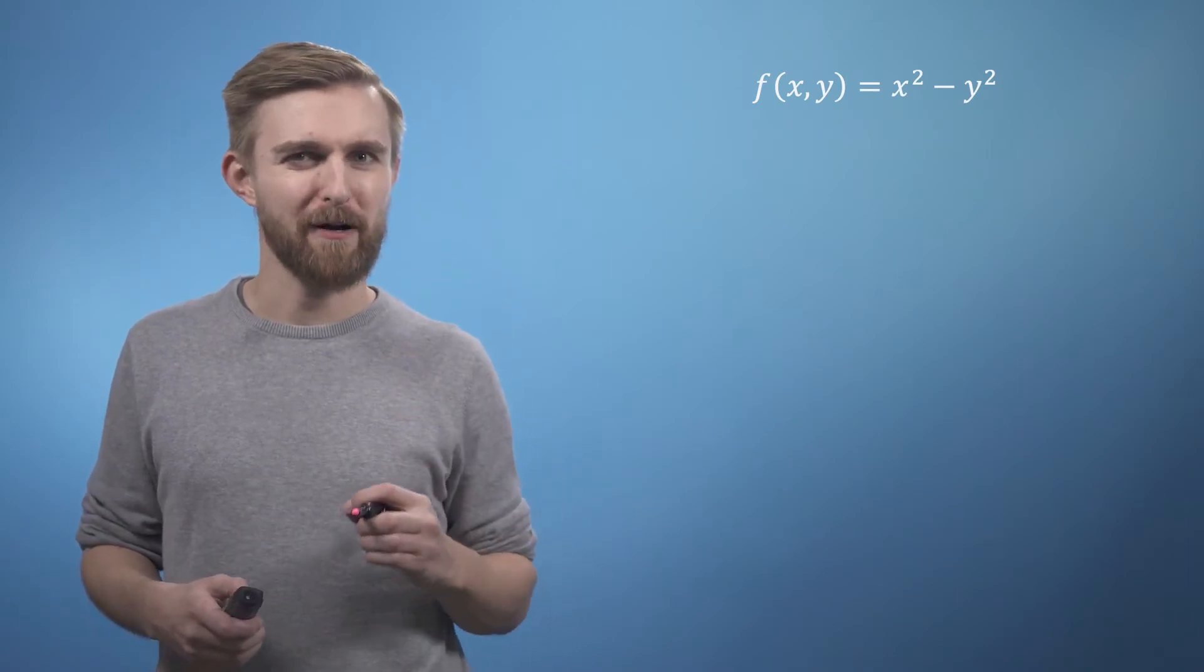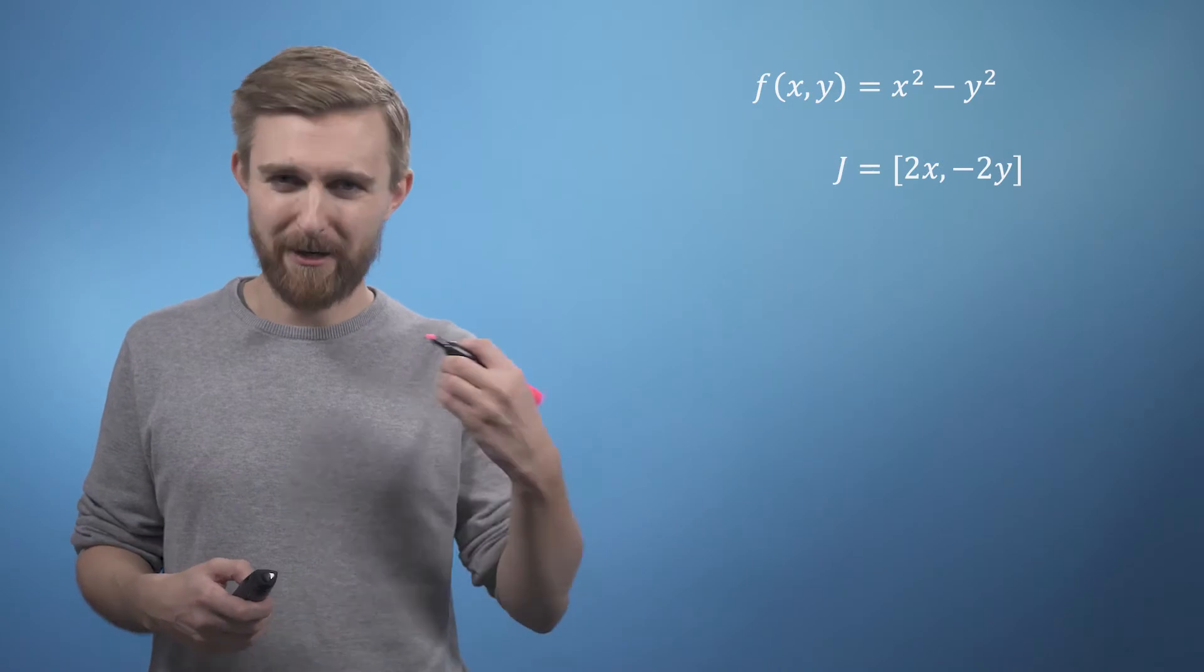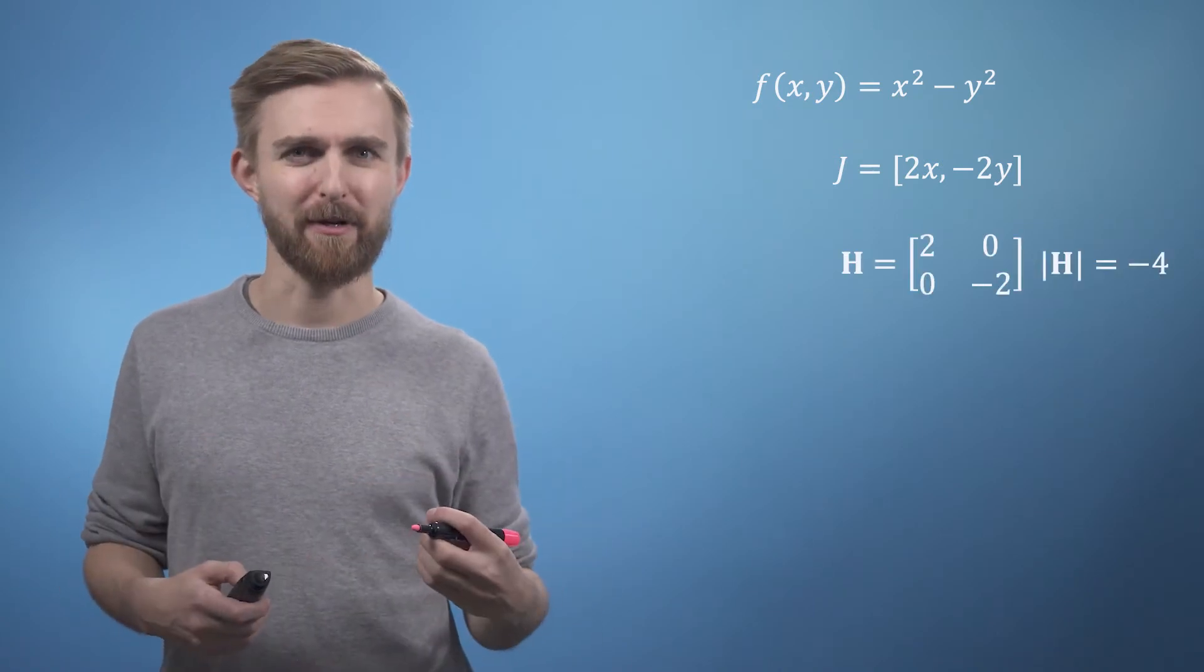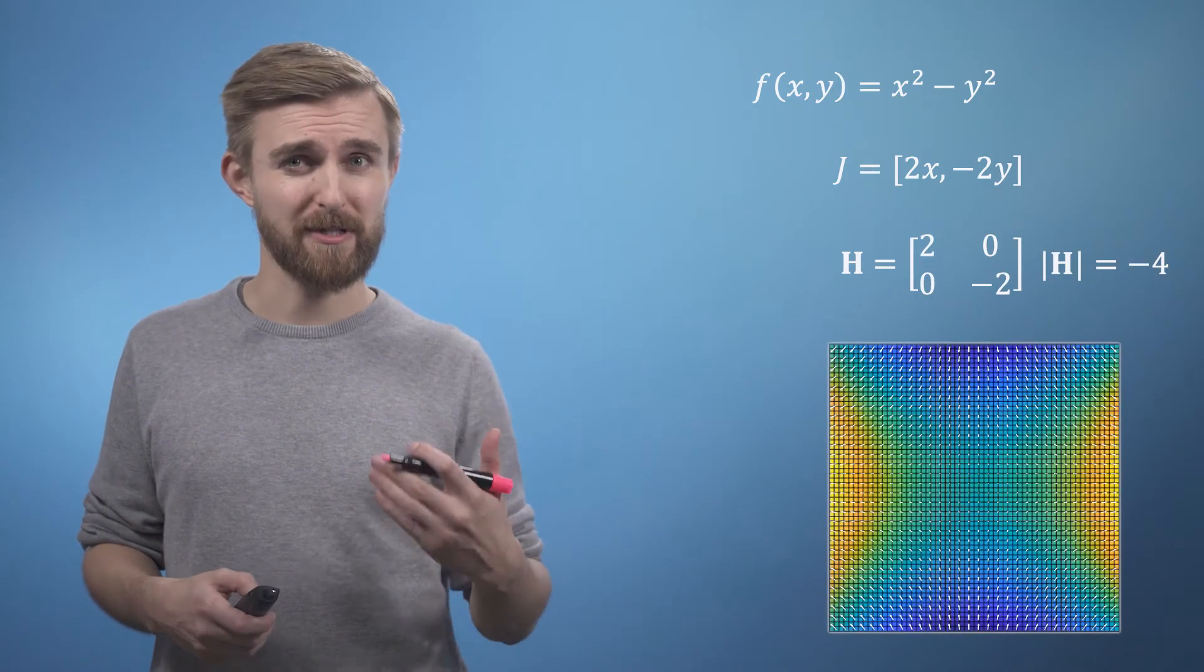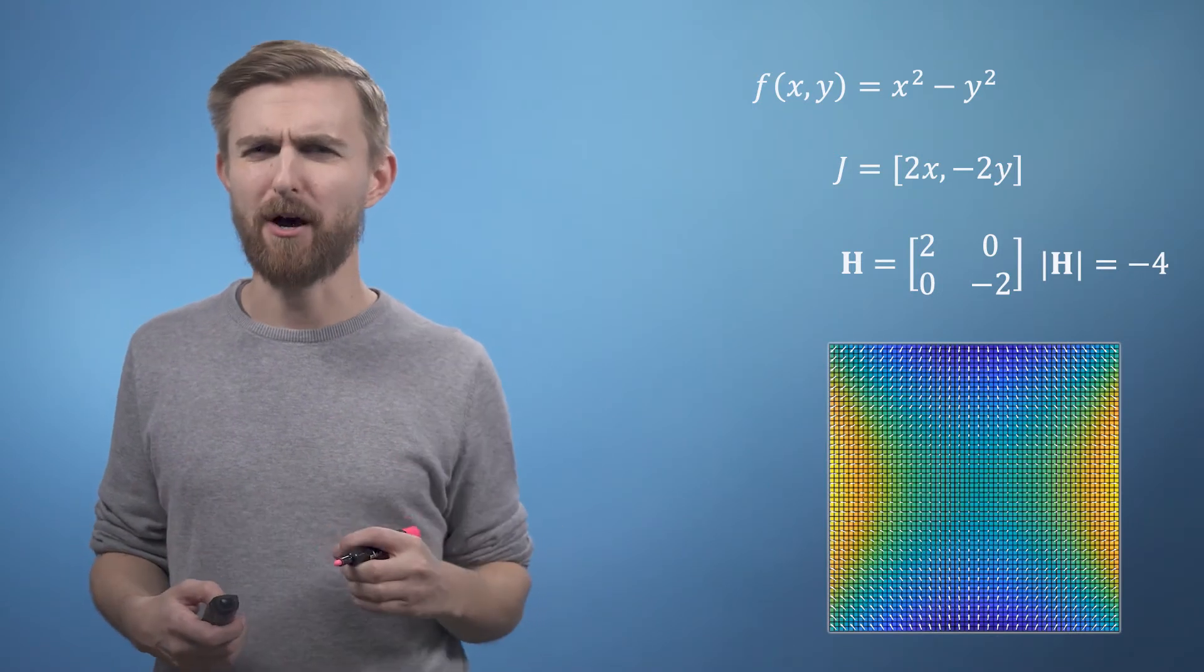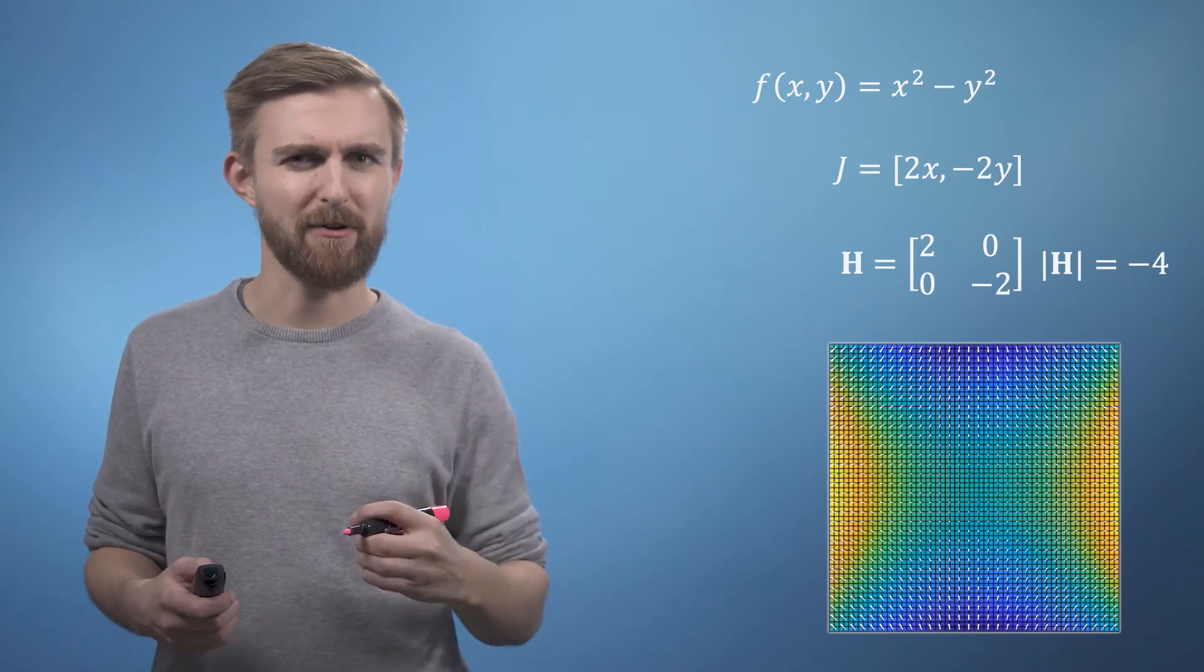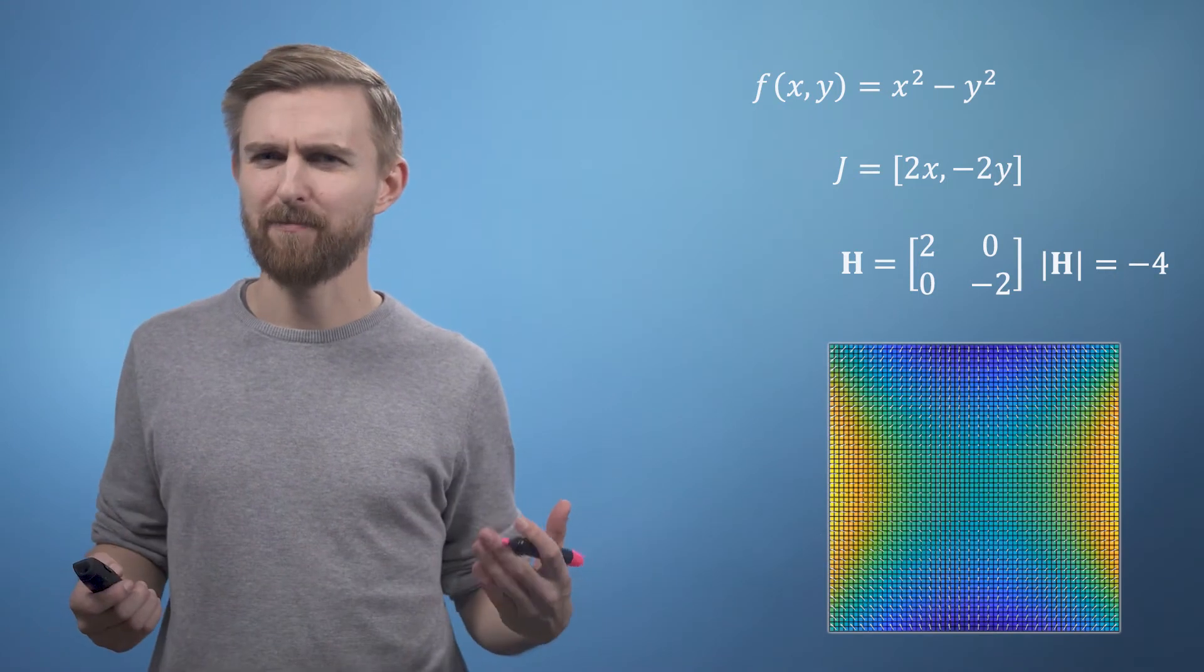Lastly, slightly modifying our function to include a minus sign and recalculating our Jacobian and our Hessian and our Hessian determinant, we now see the third interesting case. This time, our Hessian determinant is negative, so we know that we're not dealing with a maximum or a minimum. But clearly, at this point 0, 0, the gradient is flat. So what's going on?